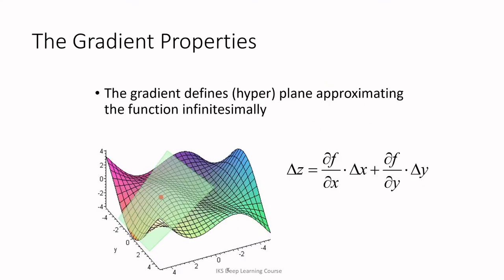Another interesting property is that a gradient at a point defines a hyperplane that approximates the function in a very small neighborhood of that point. The approximation is given by: del z = (del f / del x) * delta_x + (del f / del y) * delta_y.